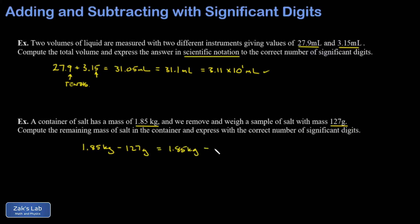I have 1.85 kilograms minus 0.127 kilograms. Then I can get the subtraction done and I get 1.723 kilograms remaining in the container.